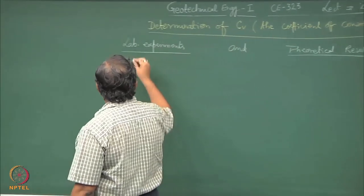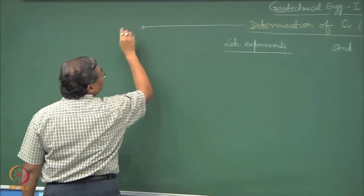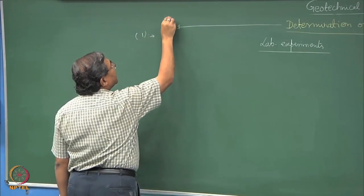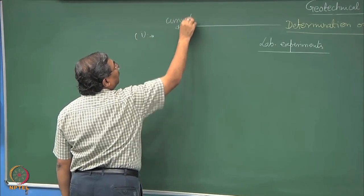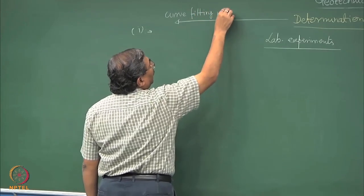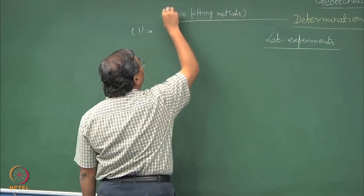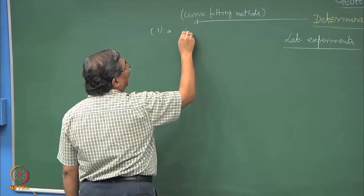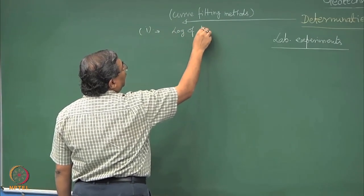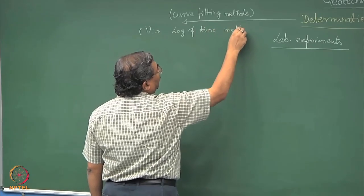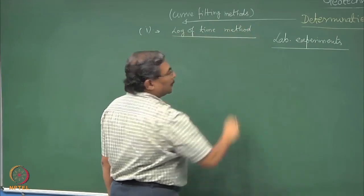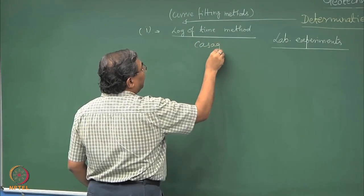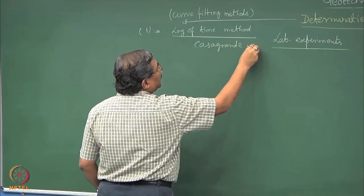In real life there are two ways of determination of cv. Number one, these are known as curve fitting methods. The first one is what is known as the log of time method. This was proposed by Casagrande.